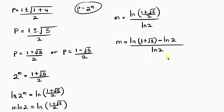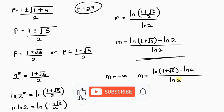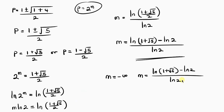So this is the final answer. We found that m equals negative infinity from the first case, and m equals ln(1 plus the square root of 5) minus ln 2, divided by ln 2, from the second. Since m must be a natural number, we take only this second expression as the final result. If you learned something from this video, please give it a thumbs up and subscribe.